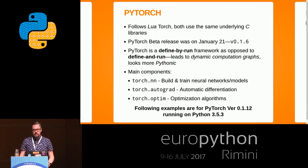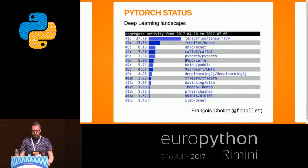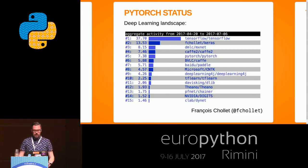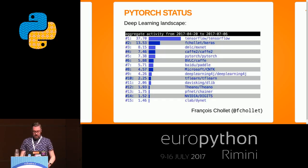The version of PyTorch these examples use is 0.1.12 running on Python 3.5. To give you a sense of the project status, there's a tweet showing aggregate activity on GitHub repos for different machine learning and deep learning libraries. PyTorch is fifth there, which is quite good for such a young project. TensorFlow is always at the top with Google and big companies behind it, but after just a few months PyTorch is doing very well at fifth spot.